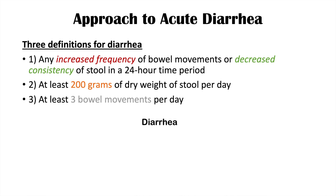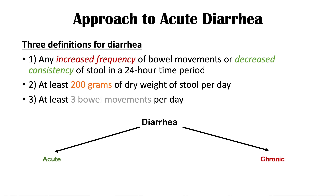Once someone has diarrhea defined by one or more of these definitions, we then split diarrhea up by the amount of time someone has been experiencing it. We break diarrhea down into acute and chronic. Acute diarrhea is having diarrhea for less than two weeks, while chronic diarrhea is having diarrhea for more than two weeks — that's where we draw the line.